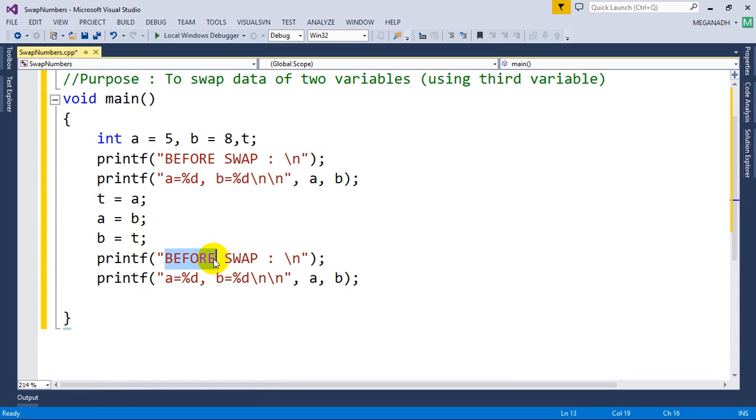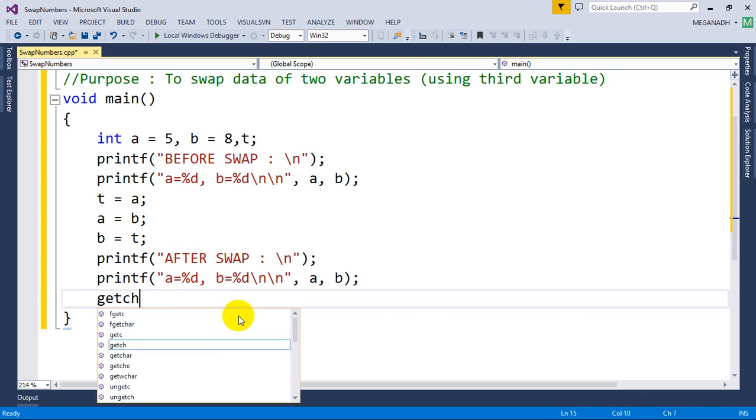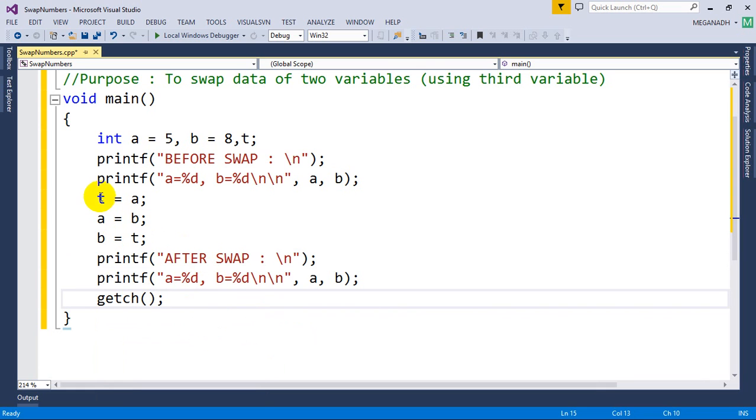But only one thing that I need to change here is after swap. And now let's see if it works, I'm going to use getch. That's it, it's a very simple program using a temporary variable t we are swapping the data between two variables. And let's see if it works, I'm going to execute this.